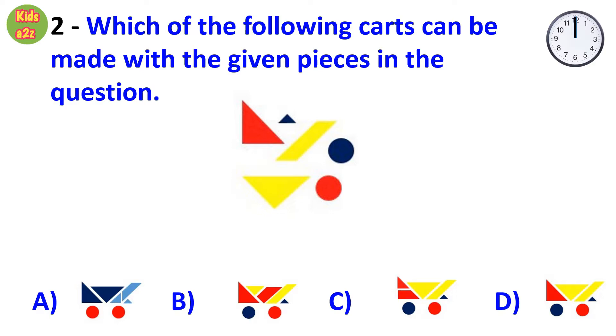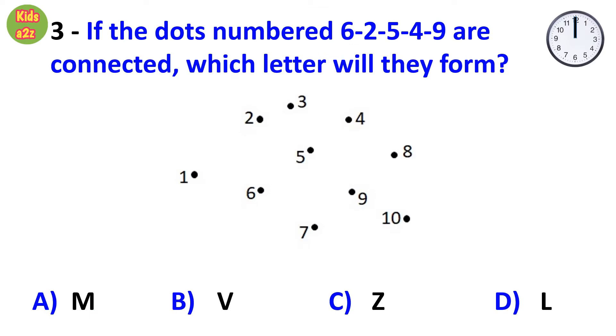Answer is option D. Question number 3: If the dots numbered 6, 2, 5, 4, and 9 are connected, which letter will they form?